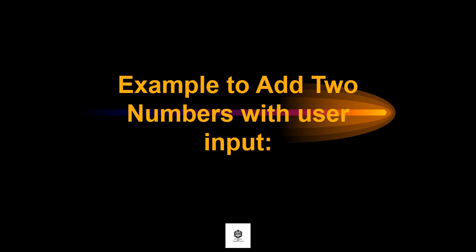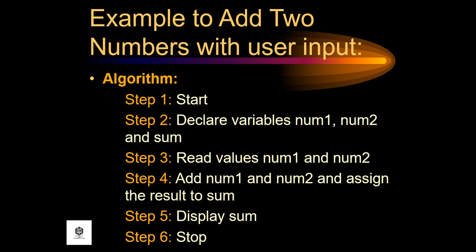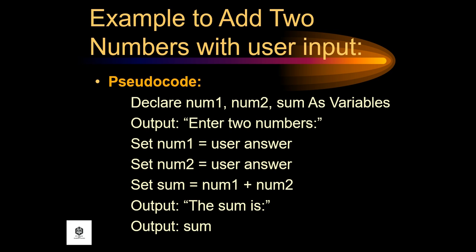Let's have an example that adds two numbers with user input. For the algorithm: Step 1, start. Step 2, declare variables num1, num2, and sum. Step 3, read values num1 and num2. Step 4, add num1 and num2 and assign the result to sum. Step 5, display sum. Step 6, stop. While for the pseudocode: declare num1, num2, sum as variables; output 'enter two numbers'; set num1 equal to user answer; set num2 equal to user answer; set sum equal to num1 plus num2; output 'the sum is'; and output the sum.